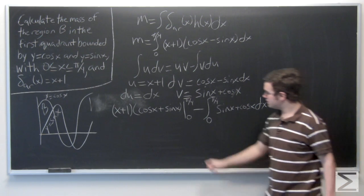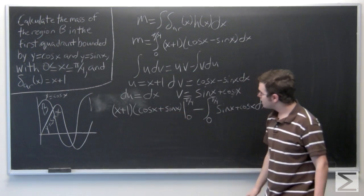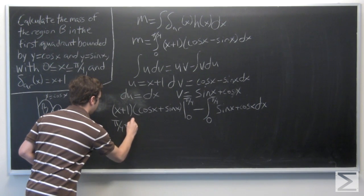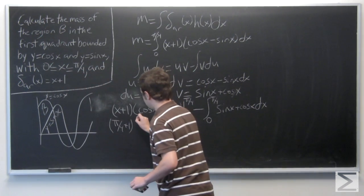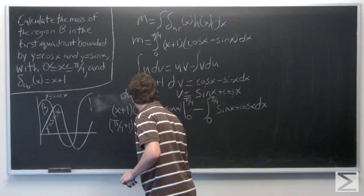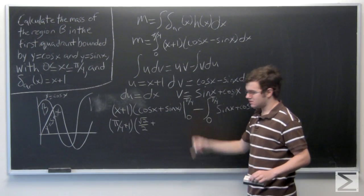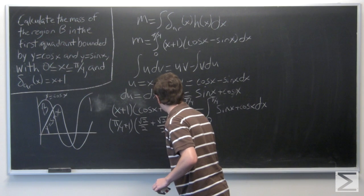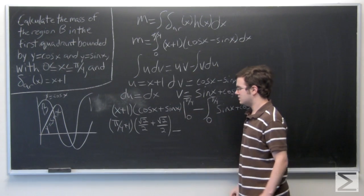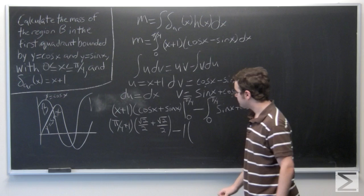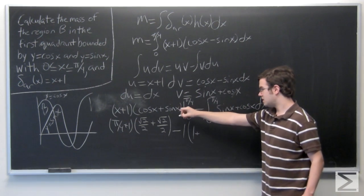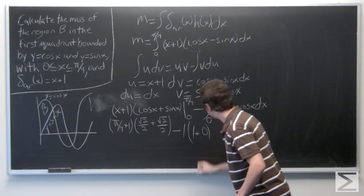Evaluating at pi over 4: x plus 1 becomes pi over 4 plus 1, times cosine of pi over 4 — which is square root of 2 over 2 — plus sine of pi over 4 — which is also square root of 2 over 2. Then minus this function evaluated at 0: 0 plus 1 is 1, cosine of 0 is 1, and sine of 0 is 0.